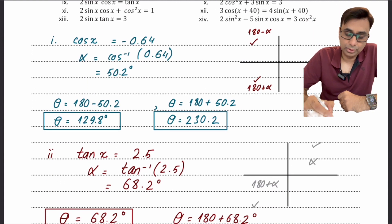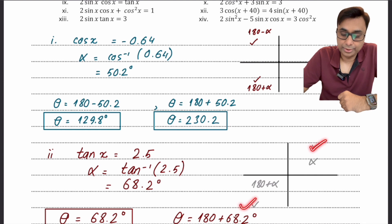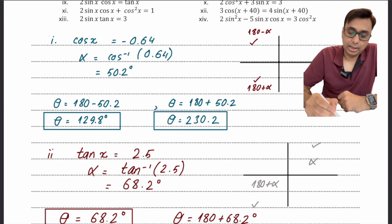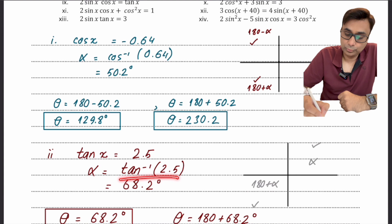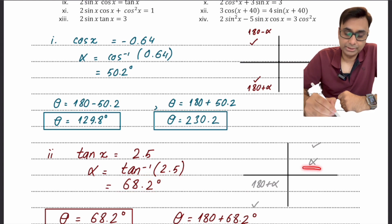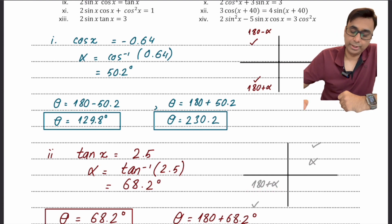For the next example, tan x equals 2.5. Since tan is positive, the relevant quadrants are first and third. In the first quadrant the angle is alpha, and in the third it is 180 plus alpha. Taking tan⁻¹(2.5) gives the basic angle of 68.2°. So the first quadrant answer is 68.2° and the third quadrant answer is 180 plus 68.2, which equals 248.2°.